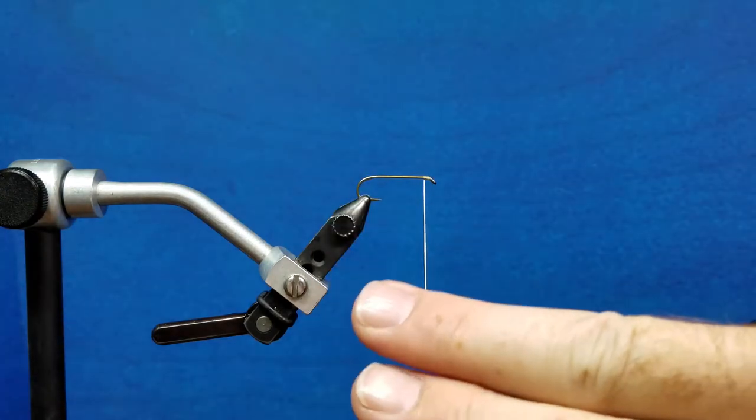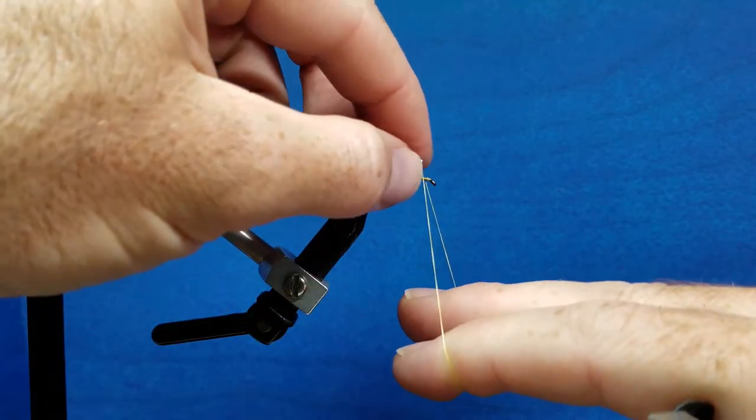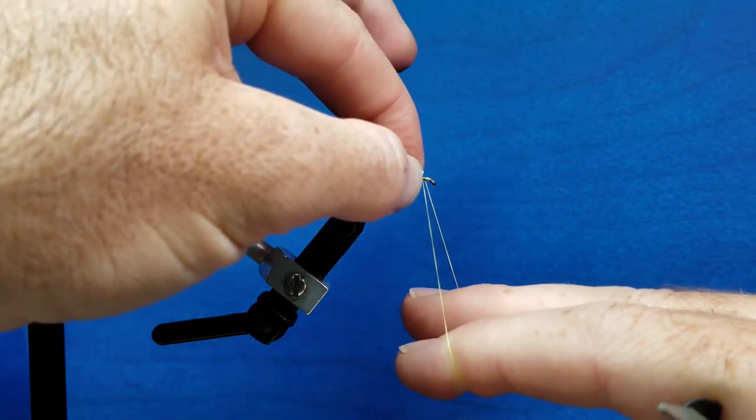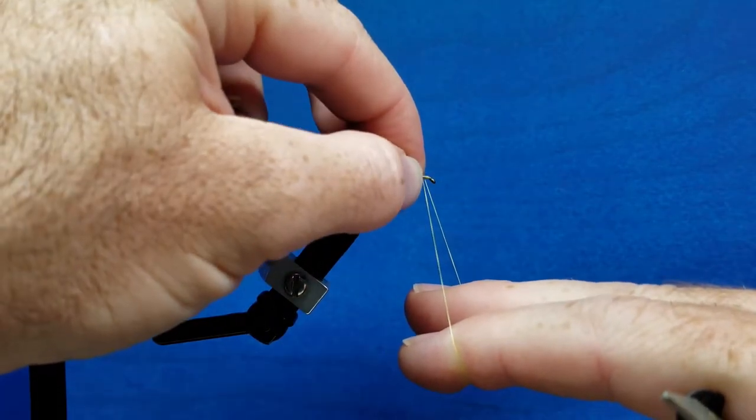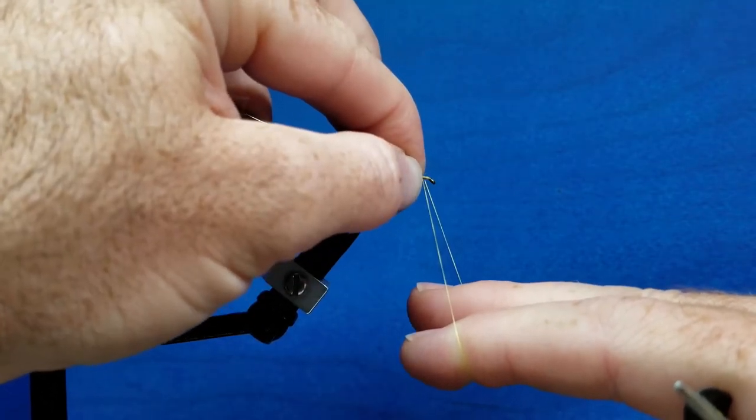I'm going to drape my index finger and middle finger on the thread and bring the tip of that bobbin right back to where my tie-in point is. Now the only job my left hand has here is to hold this in place. That's my pivot point, and that's going to hold as an anchor.